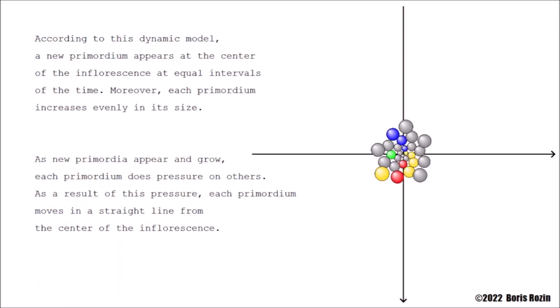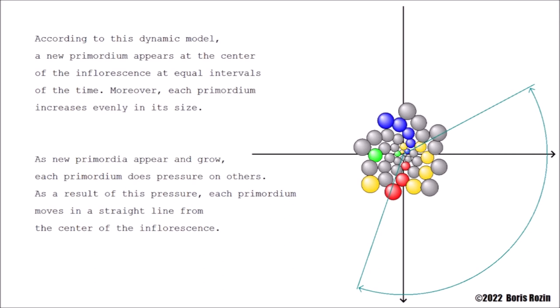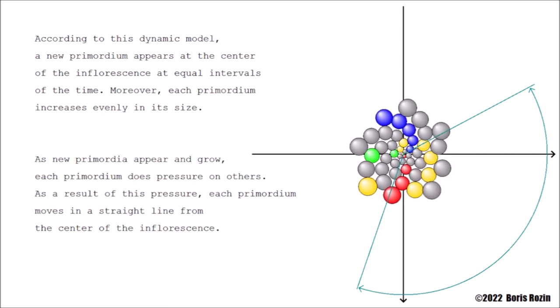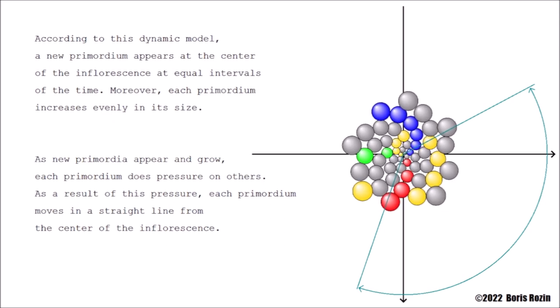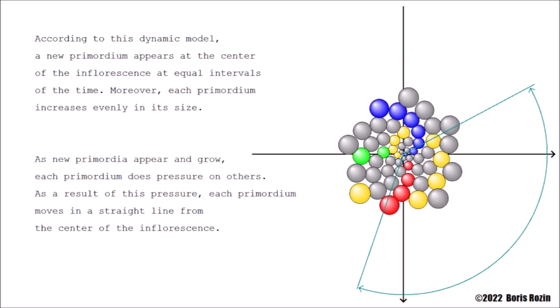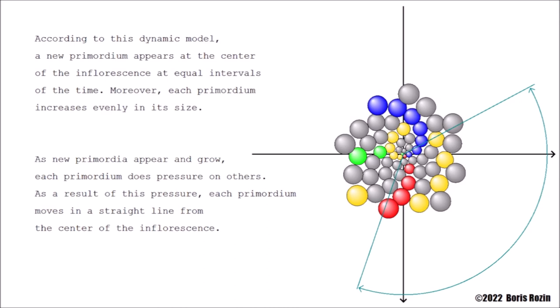According to this dynamic model, a new primordium appears at the center of the inflorescence at equal intervals of time. Moreover, each primordium increases evenly in its size. As new primordia appear and grow, each primordium puts pressure on others. As a result of this pressure, each primordium moves in a straight line from the center of the inflorescence.